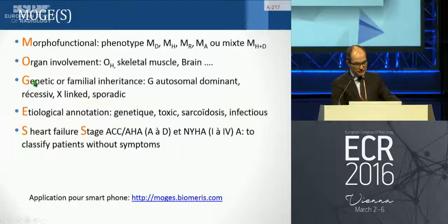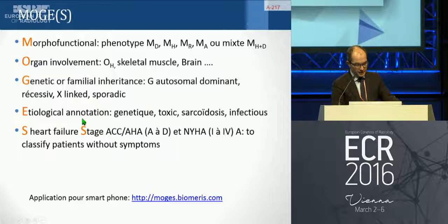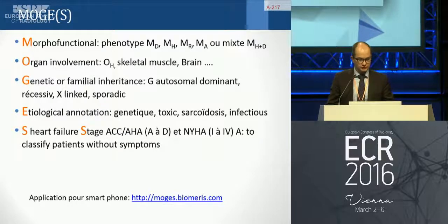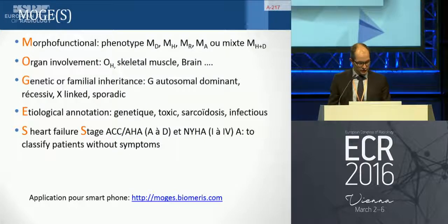G refers to genetic or familial inheritance: autosomal dominant, recessive, X-linked, and so on. E is etiological — it could be genetic, but also toxic, sarcoid disease, other autoimmune disease, or infectious.